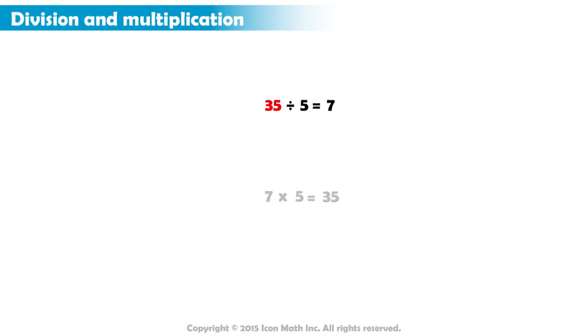Note that 35 is called the dividend and 5 is called the divisor, while our answer 7 is the quotient.